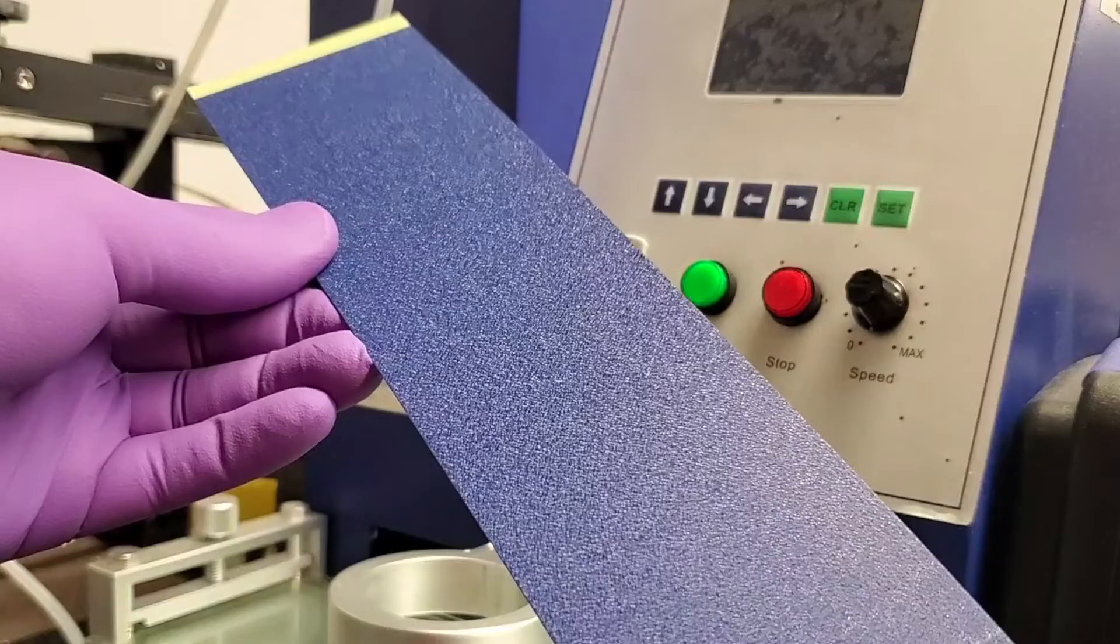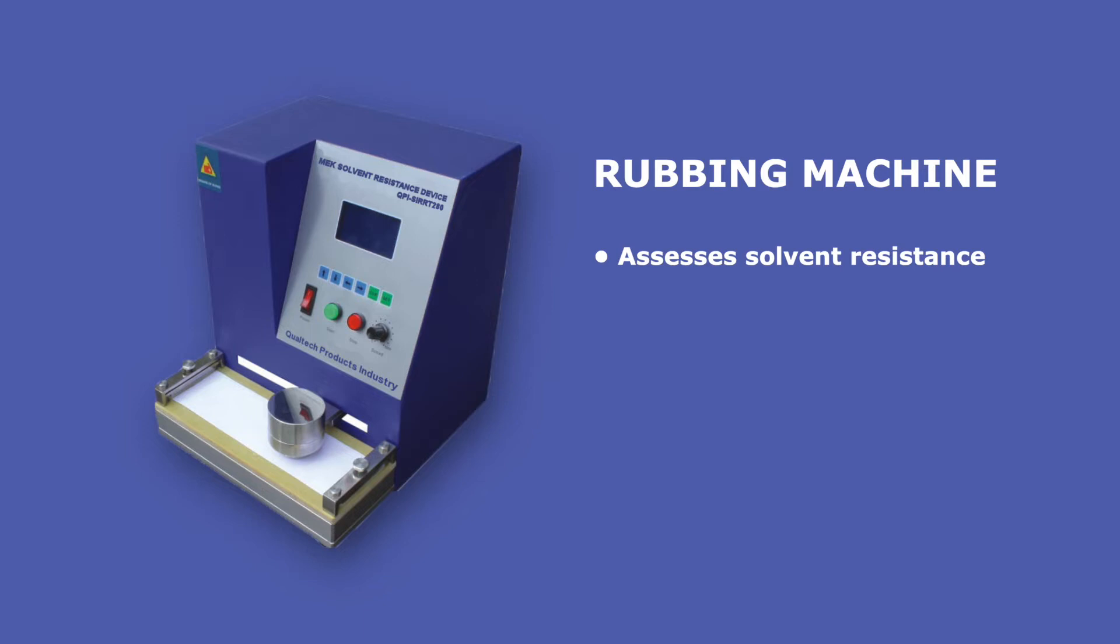Rubbing a cured coating with a cloth saturated with an appropriate solvent is one way to determine whether a proper level of cure is reached. In this video, a mechanical rubbing machine for assessing the solvent resistance of an organic coating is used.